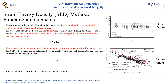One of the methods used in the present work is the strain energy density method. The basic idea of this method is that brittle fracture, dealing with both sharp and blunt U- and V-notches, occurs when the local strain energy density value averaged in a given control volume reaches a critical value that is independent on the notch opening angle and on the loading conditions. This critical value for an ideally brittle material can be determined through the conventional ultimate tensile strength according to the equation reported.